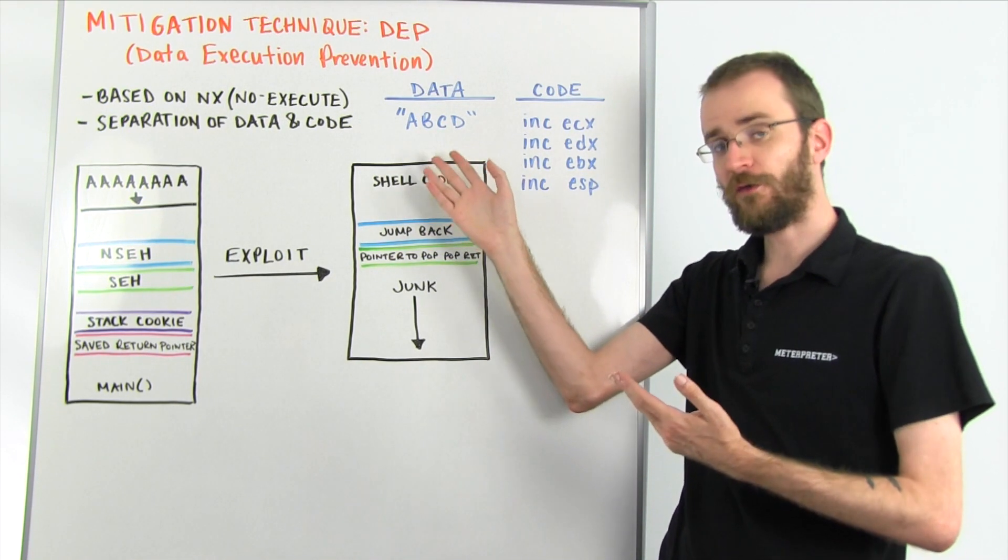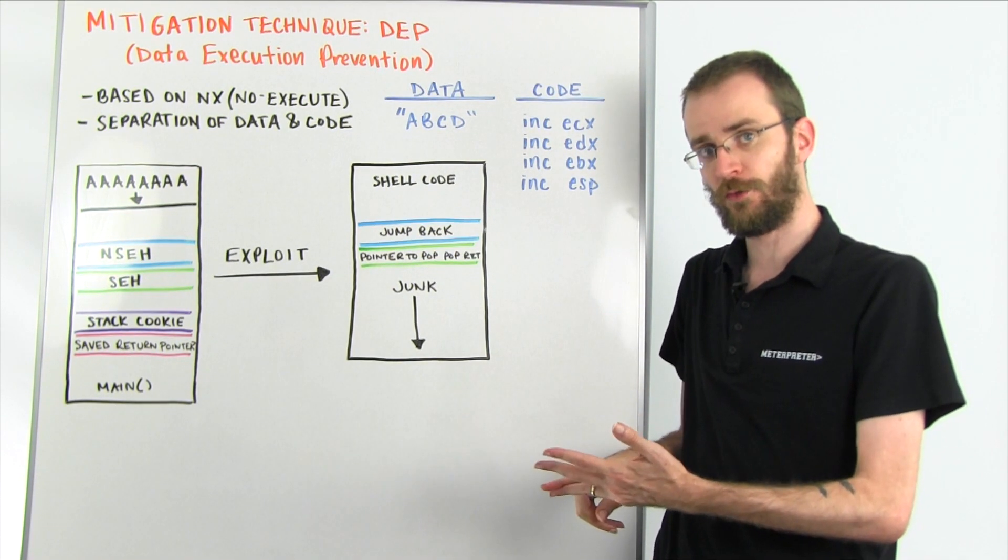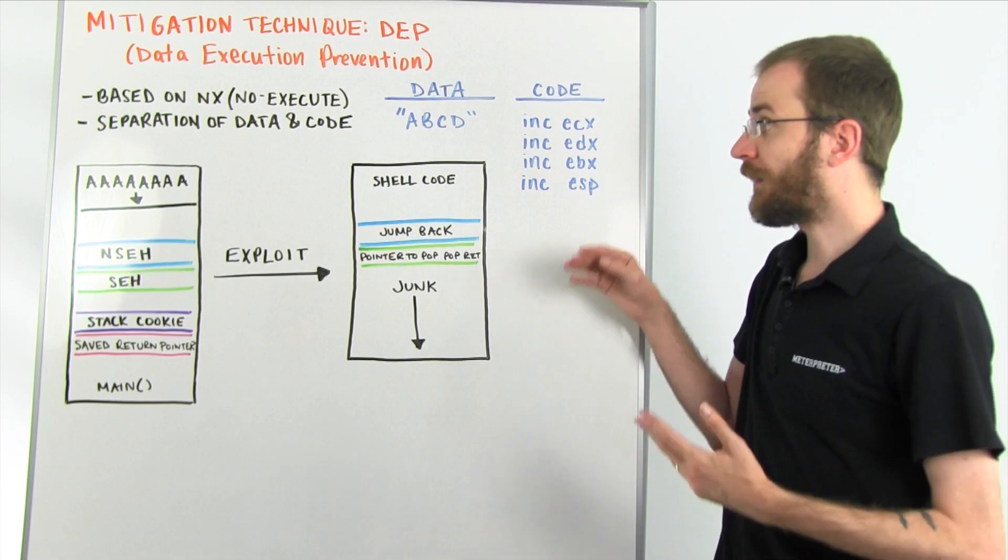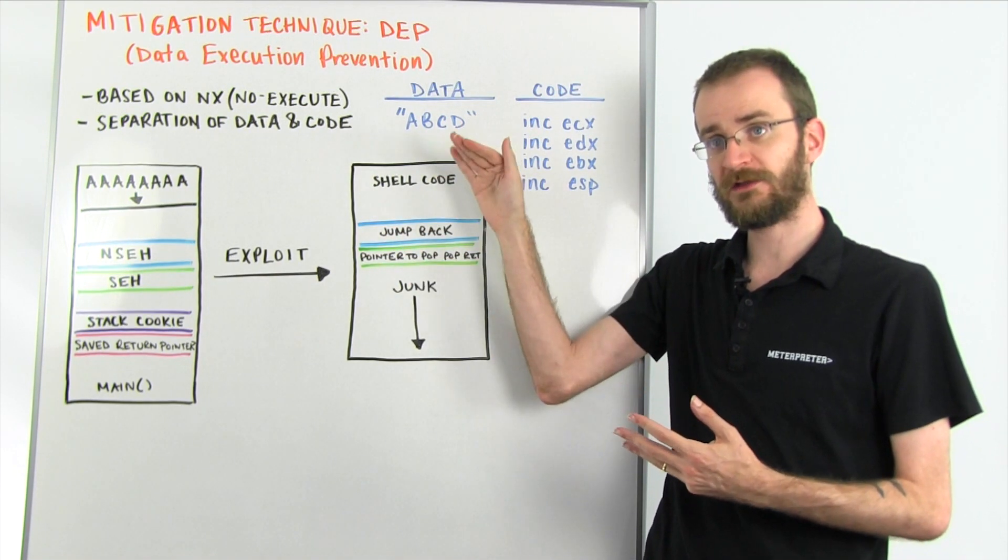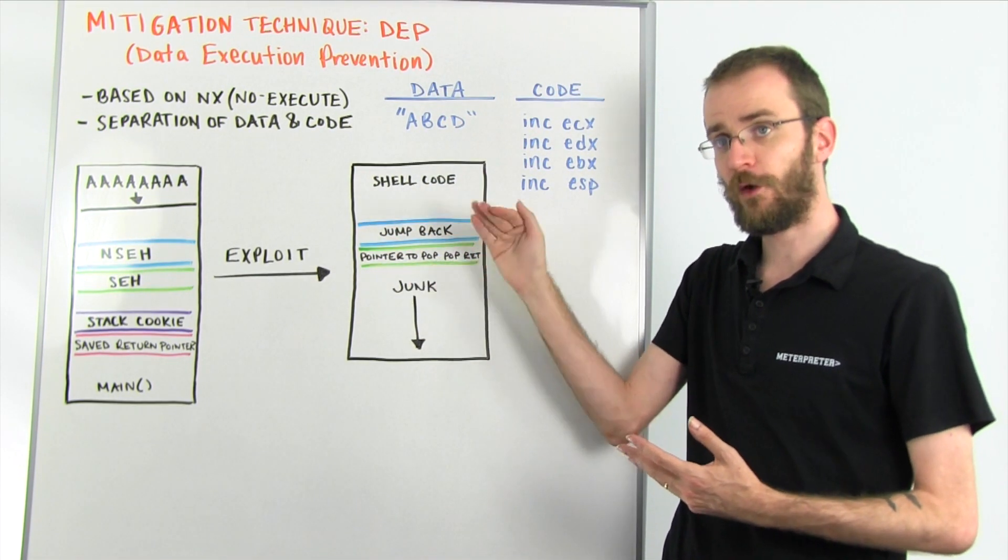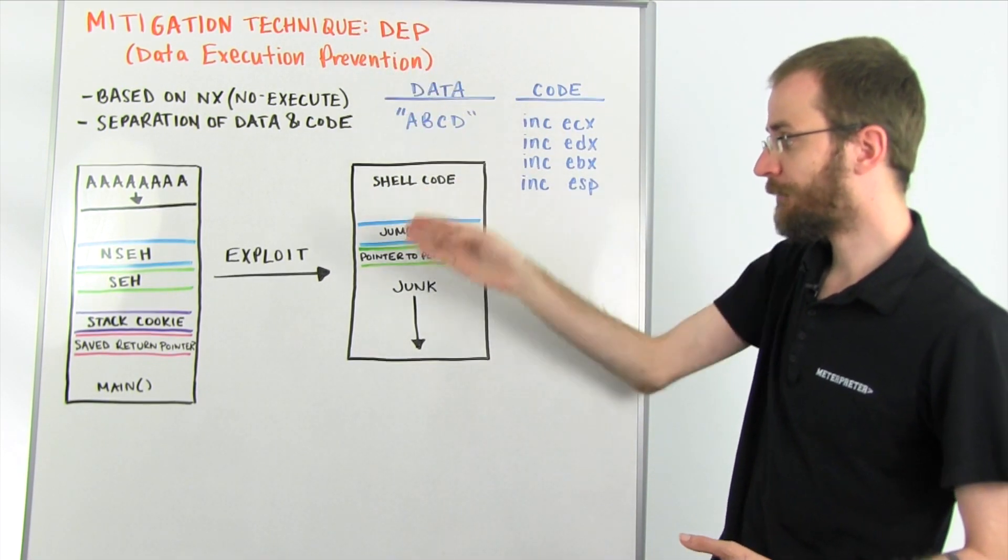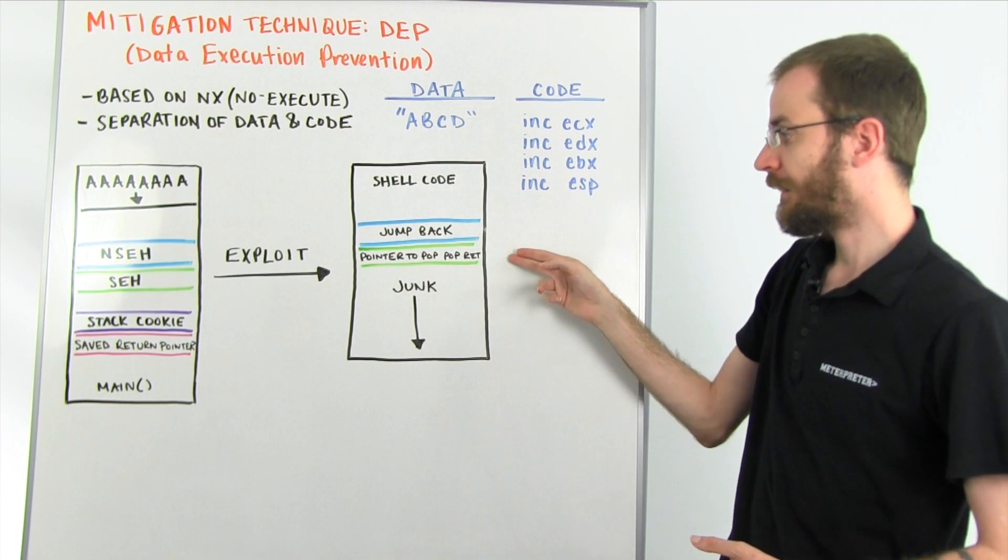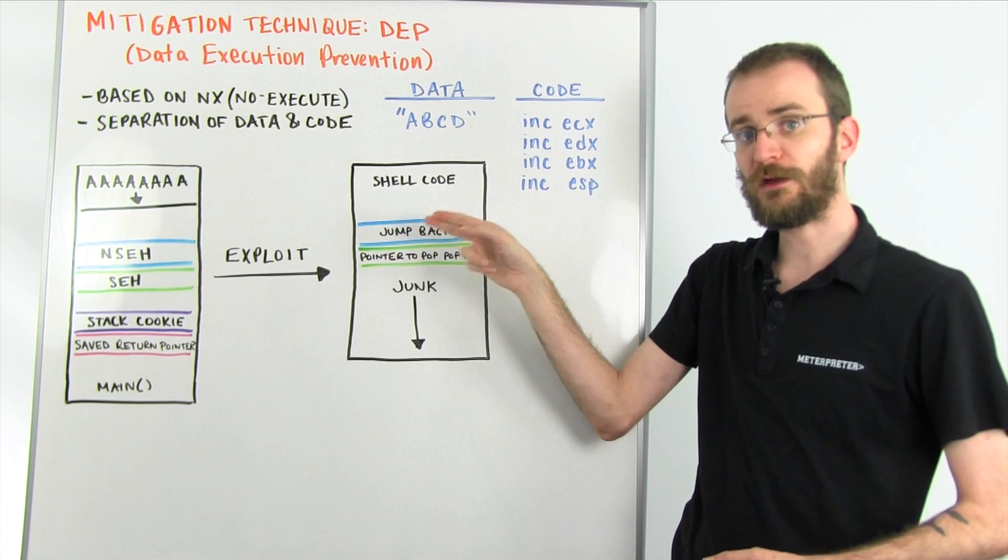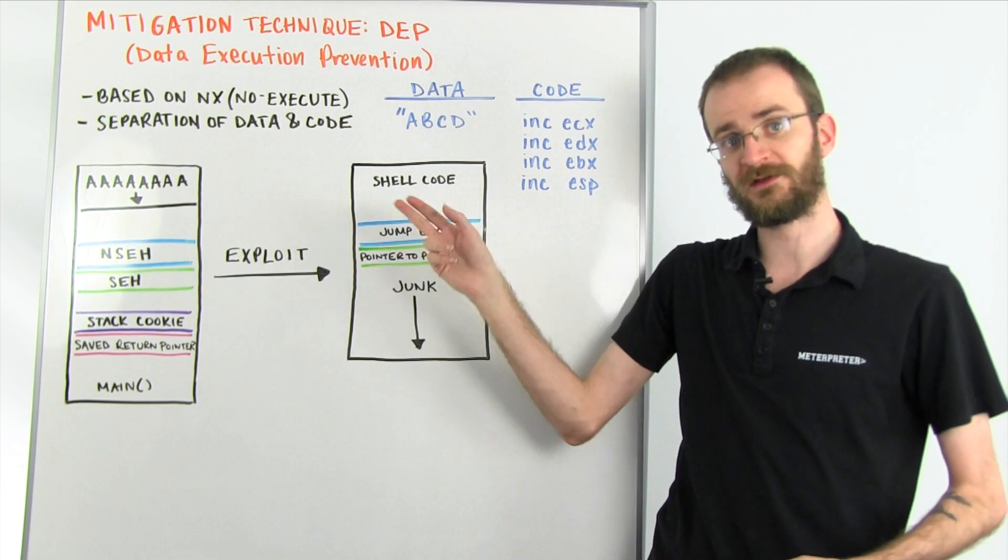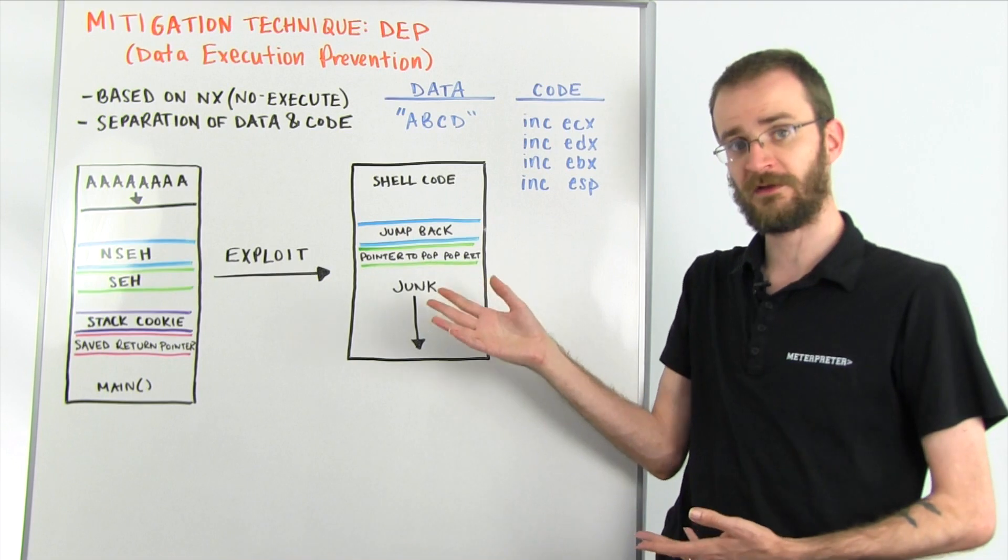By default, the stack is set for read and write permission, but is set to not be executable. So, what DEP really does is say that if that executable permission is not set on that section of memory, then it may not be run as code. That prevents us, so within a situation with DEP, you'd hit this pointer to a pop-pop return, and it would try to return into this instruction here, and it would not be executable, and would actually trigger another exception, and eventually cause the program to crash, or at least for the thread that it's running in to die.